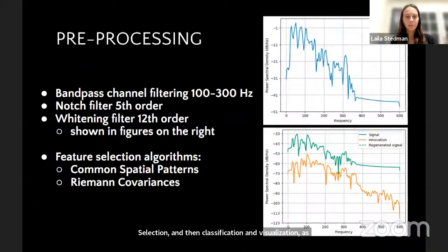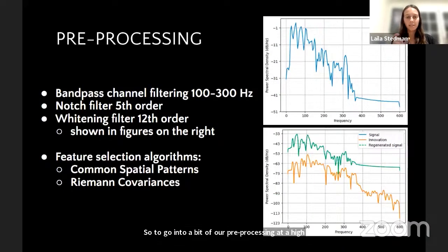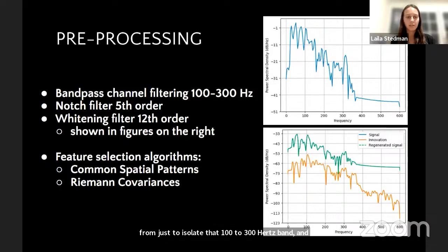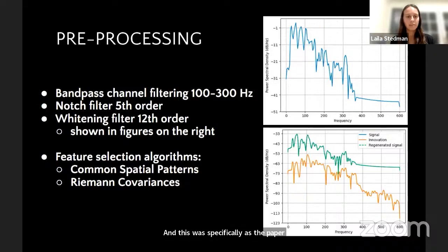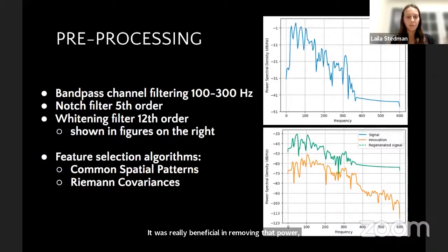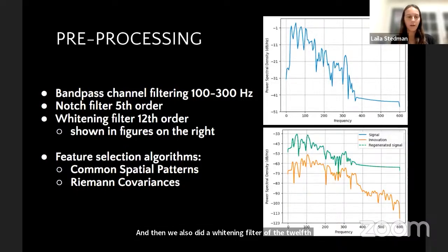Moving on to our preprocessing at a high level, we were able to do a bandpass channel filtering to isolate the 100 to 300 Hz band. We also did a notch filter of the fifth order, which was specifically as the paper illustrated — it was really beneficial in removing that power interference. We also did a whitening filter of the 12th order, and both of these are shown on the right in terms of our graphs.